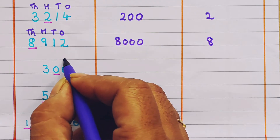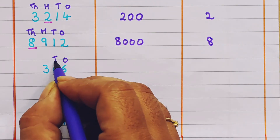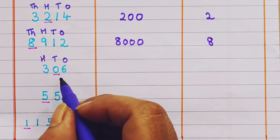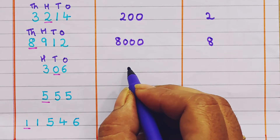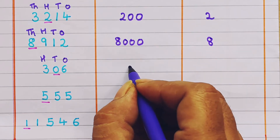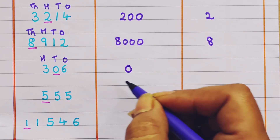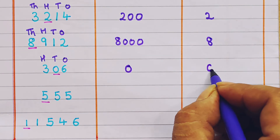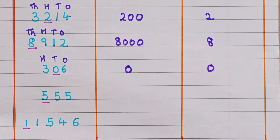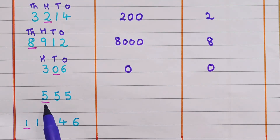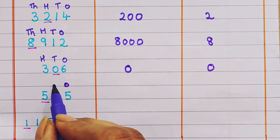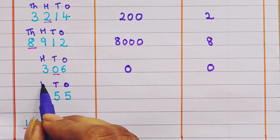Next: 306. Let's give the places — ones, tens, hundreds. Zero is present in the tens place, so the place value of zero will be zero itself, and the face value also will be zero — the number itself.